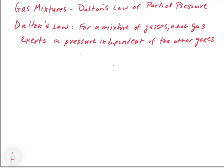This makes sense in terms of what we've been talking about. If we take PV = nRT and reorganize it so that we get pressure on one side and all the other variables on the other, we get that pressure is equal to nRT over V.